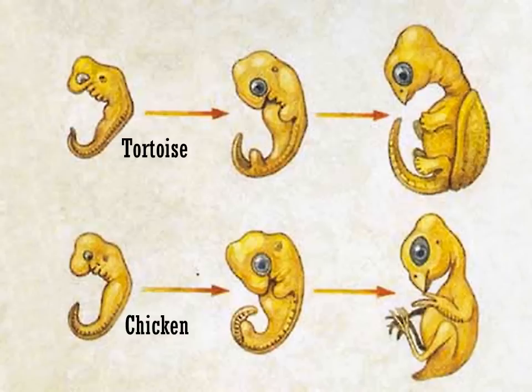Embryos are another thing we can compare. Scientists have noticed that embryos all share a common pattern of development. The longer the embryos stay similar, the more recently scientists think they were related.